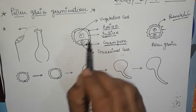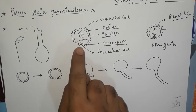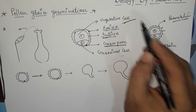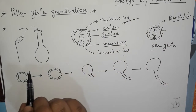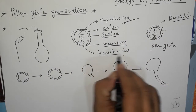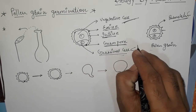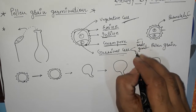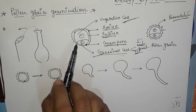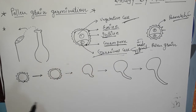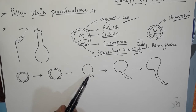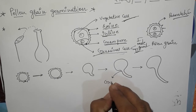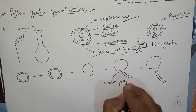Second is the intine, the inner membrane, which is involved in pollen tube formation. Third is the vegetative cell, also called the tube cell, whose nucleus is called the tube nucleus. The lower cell is called the germinal cell, which is responsible for the formation of two gametes — it produces two male gametes. The germ pore is the site where the pollen tube is formed; the exact site from where the pollen tube is produced is called the germ pore.